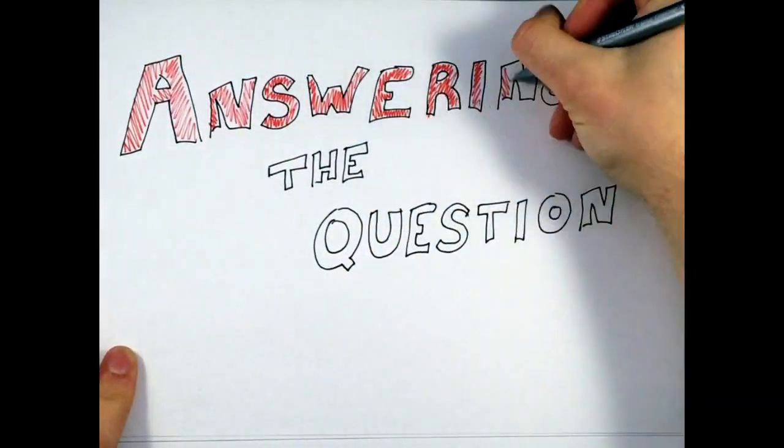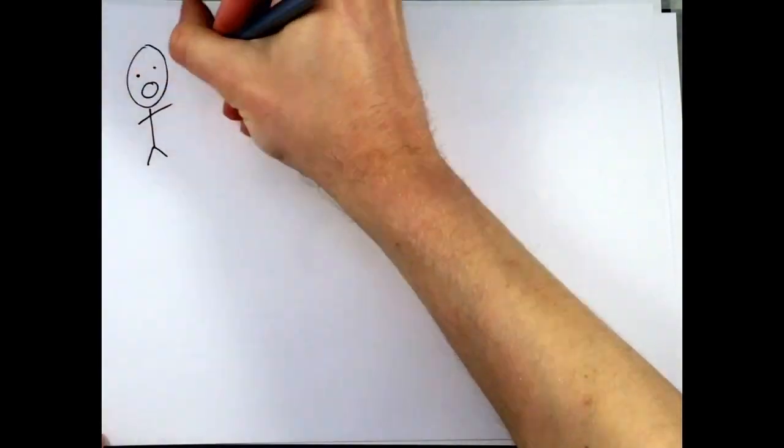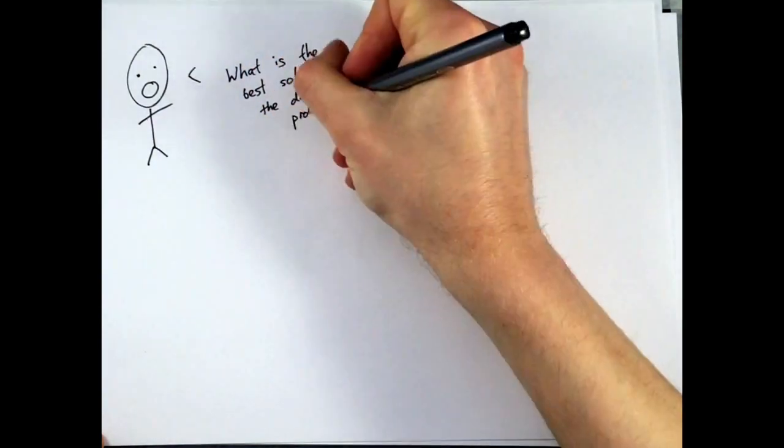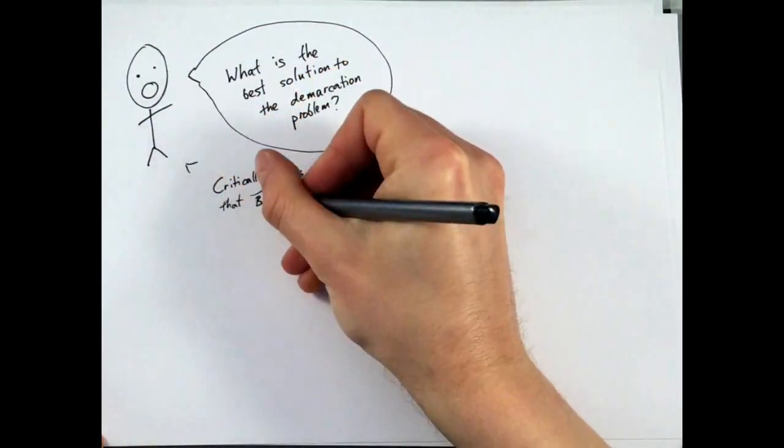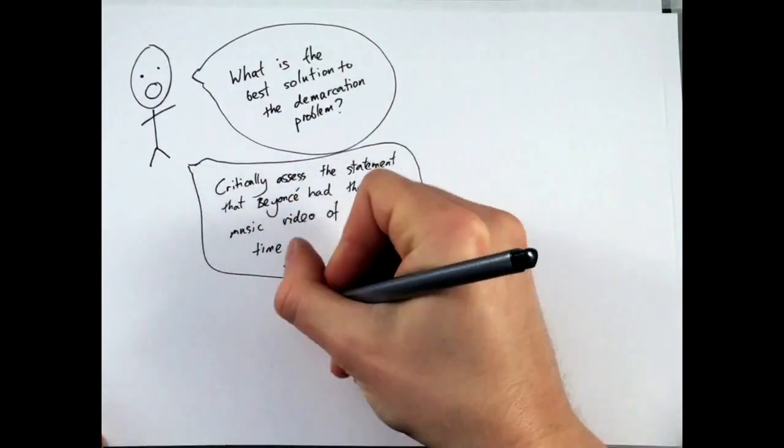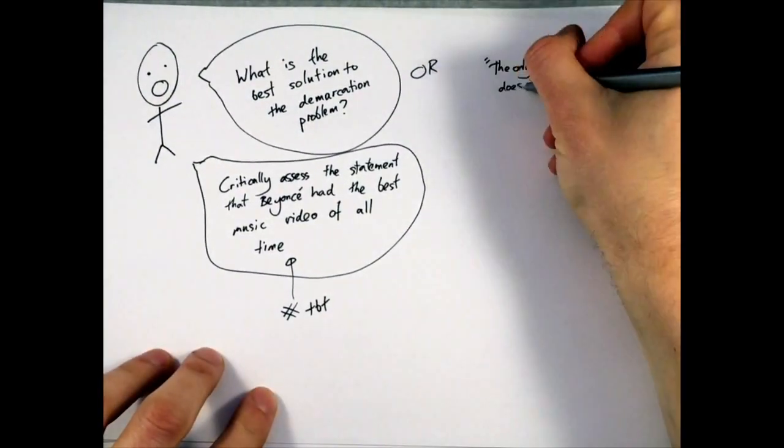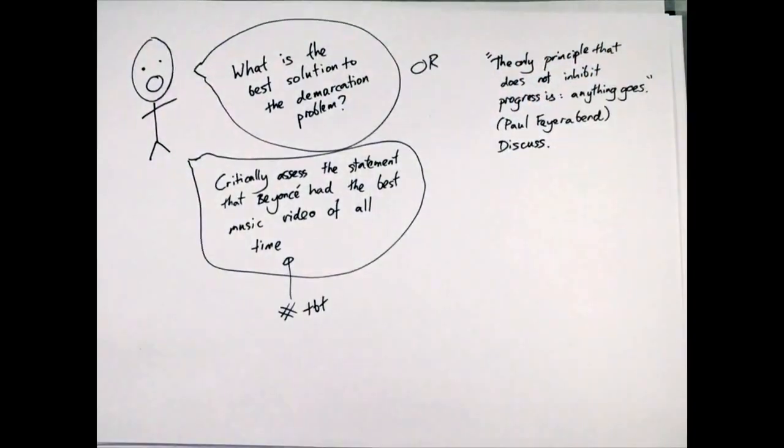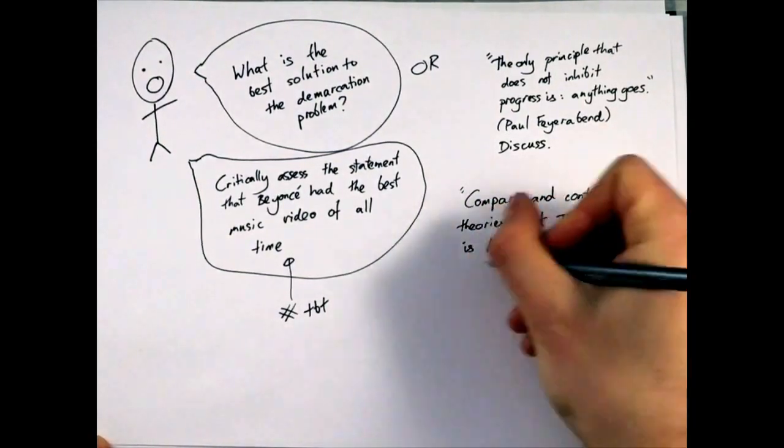Some essay questions are straightforward. They might ask you to critically assess some claim or concept, or ask you a simple question which you'll have to answer in a complex way. Other questions aren't so simple. They'll make a statement and tell you to discuss it. They might ask you to compare and contrast two different ideas, or say which of two theories is the more accurate. I'm going to talk about both kinds of questions here.